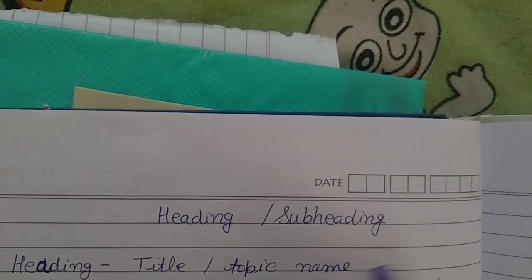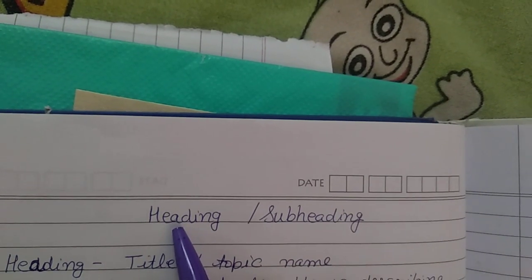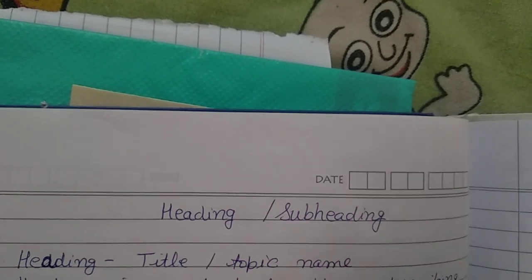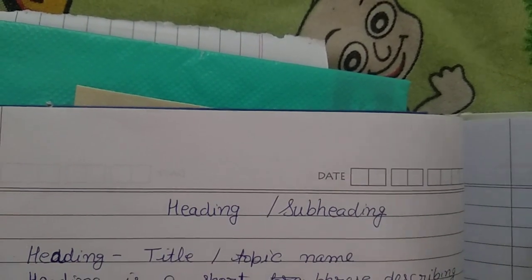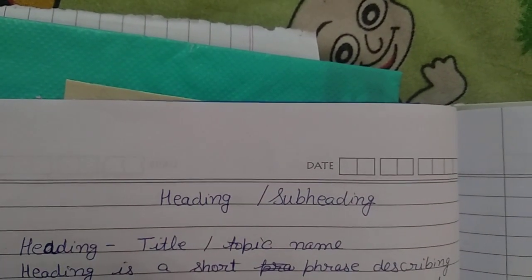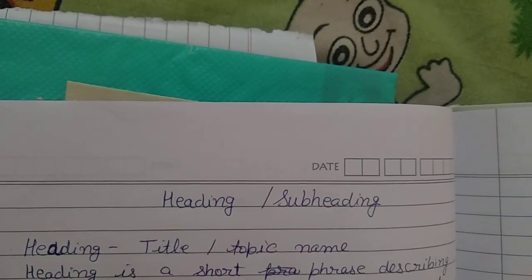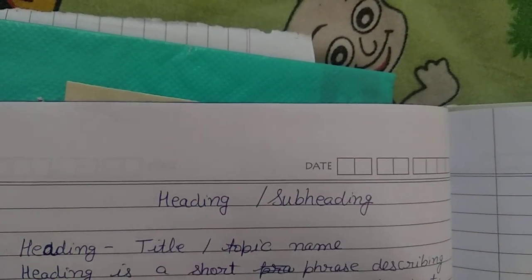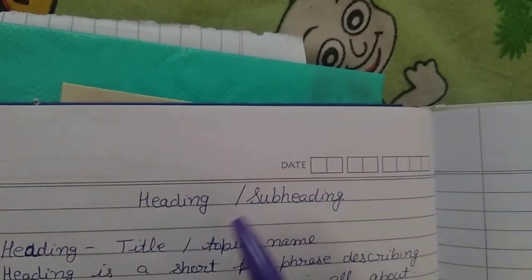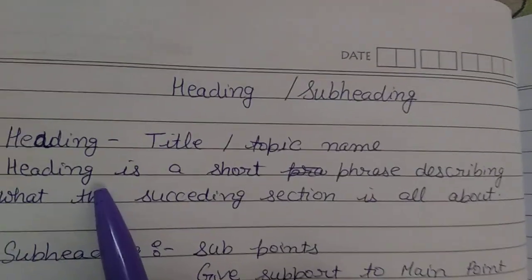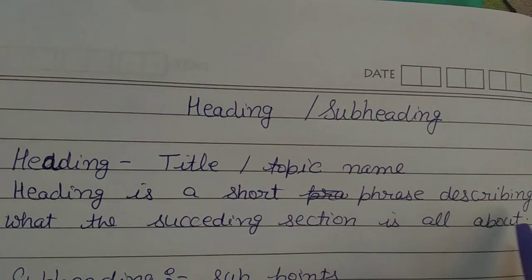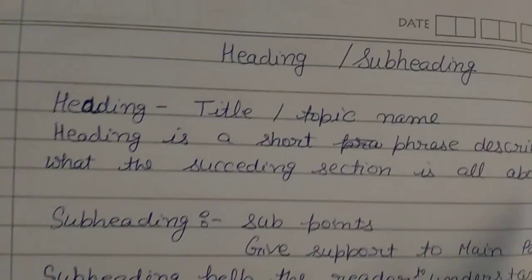So what is a heading? Heading means you are giving a title or topic name to your writing — what your writing is all about. The main part, the main aim, the main title is your heading. So a heading is a short phrase describing what the succeeding section is all about.